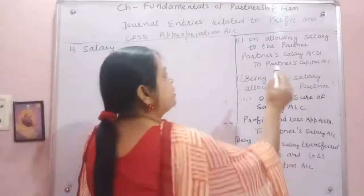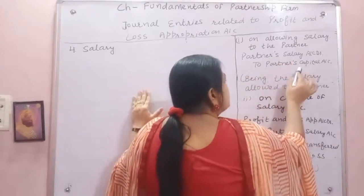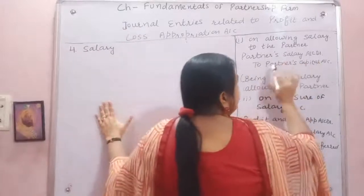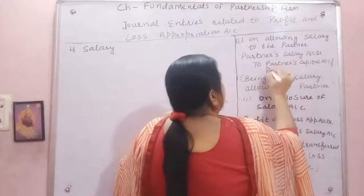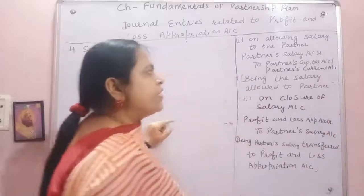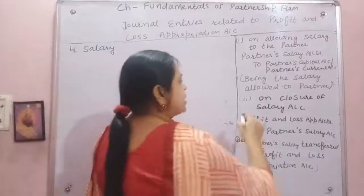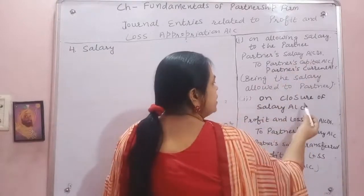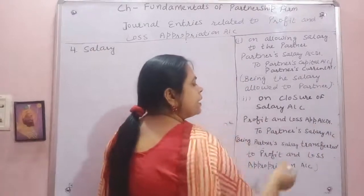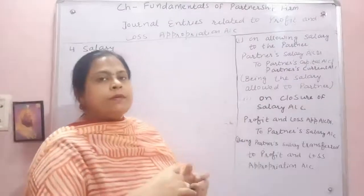पहली entry — salary देते हैं partner को: Partners Salary Account debit to Partner Capital Account (fluctuating) या Partners Current Account (fixed capital). Narration: being the salary allowed to partner. दूसरी entry — salary account को close करने के लिए: Profit and Loss Appropriation Account debit to Partner Salary Account.